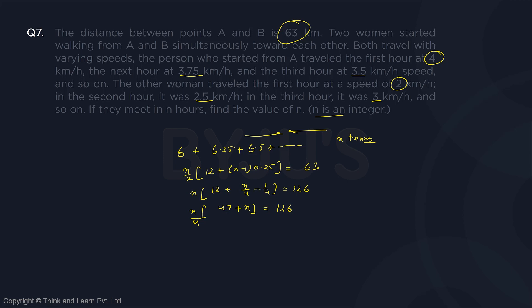Or basically, n square plus 47n should be equal to 4 times this, that is 504, or n square plus 47n minus 504 should be equal to 0. So quadratic equation.